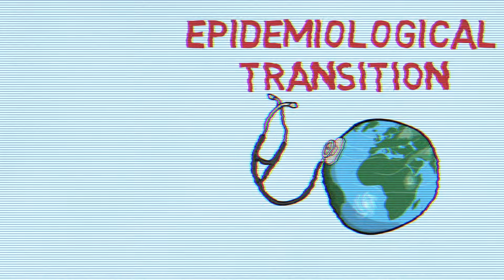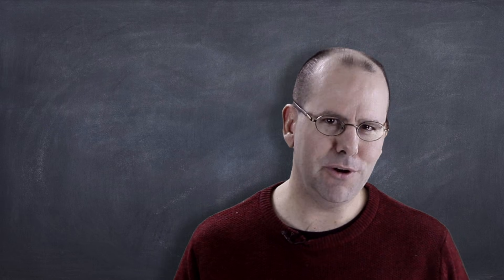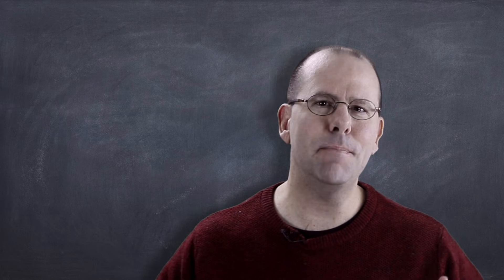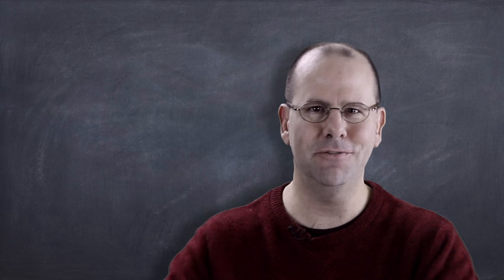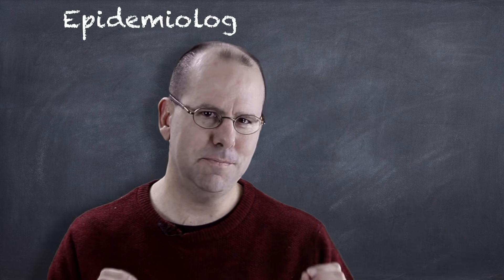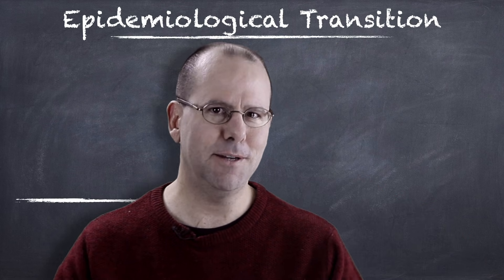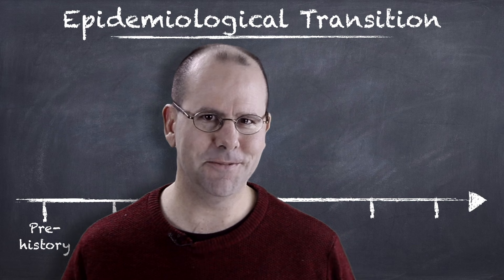To understand this better, we're going to take a look at the history of epidemiological transition — how we got to where we are right now — and what the future has in store for us, because this process is far from over. In 1971, Abdul Omran proposed his theory as to how patterns of mortality have changed over time, suggesting there have been three phases of epidemiological transition.